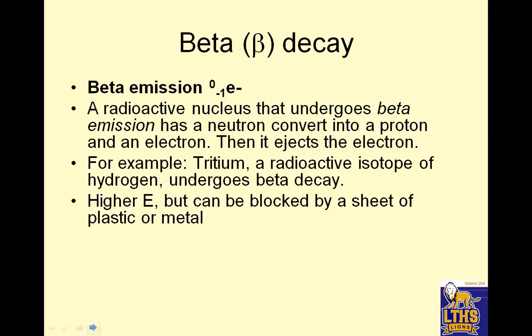Beta decay. We saw a picture before. Beta emission often looks like this, or it looks like this. That's supposed to be a 0, not a 6. Whoa, look at the crazy line. A radioactive nucleus that undergoes beta emission has a neutron convert into a proton and an electron. Then it spits out the electron.